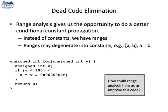First, range analysis helps in dead code elimination. For instance, consider this program. We know that inside a branch V will be less than 100. Because it's unsigned, it must also be greater than or equal to 0. But then we are doing an AND with 255, which is FF in hexadecimal. This operation cannot change a variable that's between 0 and 100, so this code essentially does nothing and we could eliminate it.